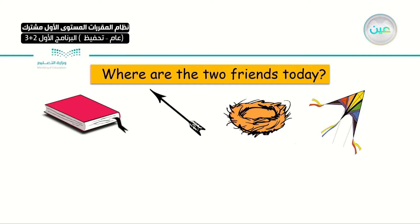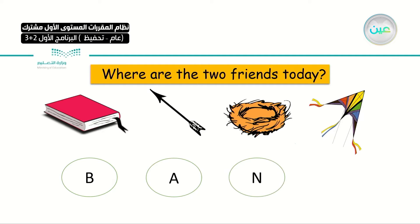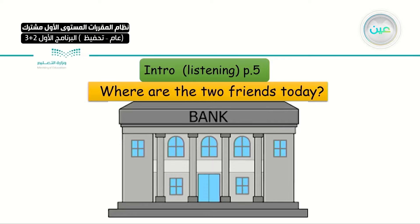Where are the two friends? Do you remember Amal and her friend Yasmin? We talked about them when they were in the shop, then they were talking about the book. Today, where do you think they are? We'll guess — the first letter from each word will tell you where they are. Book gives B, arrow gives A, nest gives N, kite gives K. So they are in the bank.